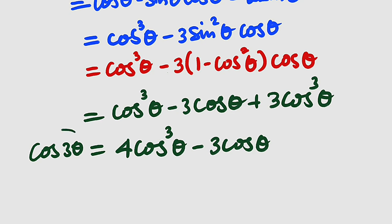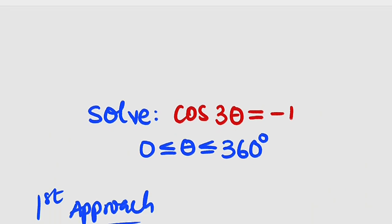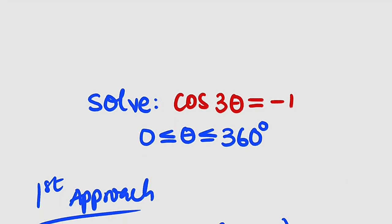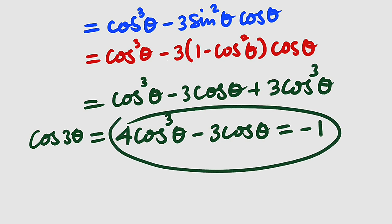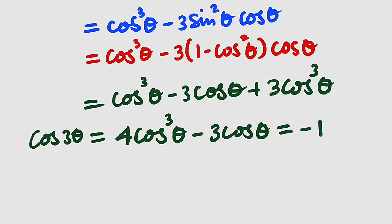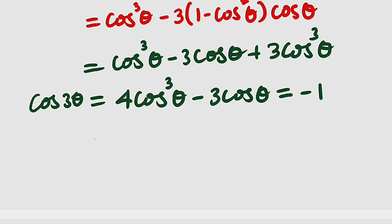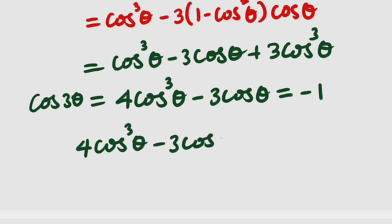But remember that cosine of 3 theta equals negative 1. So 4 cosine cubed theta minus 3 cosine theta equals negative 1. Bringing negative 1 to the left side, we have 4 cosine cubed theta minus 3 cosine theta plus 1 equal to 0.